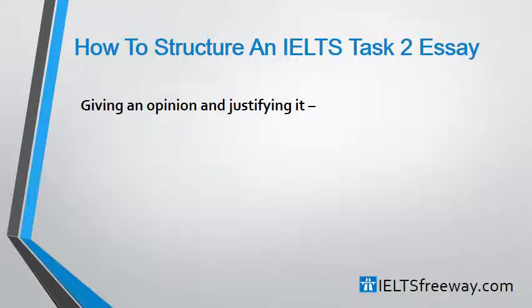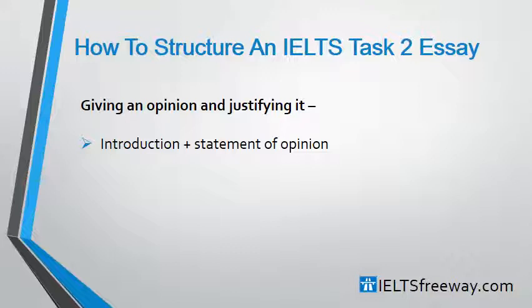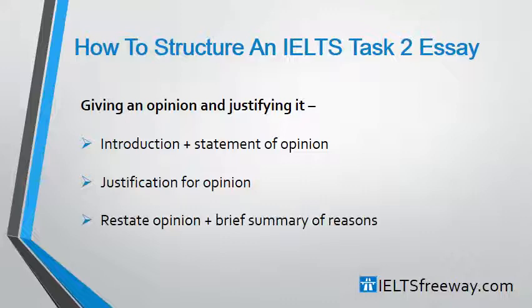If your question type requires you to give an opinion and justify it, you would again have four paragraphs. The first paragraph is your introduction and a statement of your opinion. The next two paragraphs are your body paragraphs where you give justifications of your opinion — that's why you think what you do. And finally, in the fourth paragraph, you'll restate your opinion and give a brief summary of your reasons.